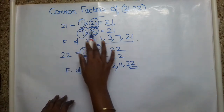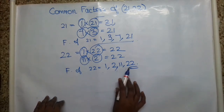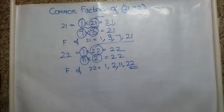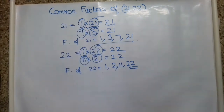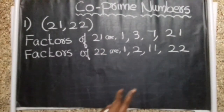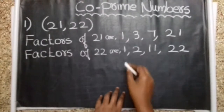So the factors of 21 are 1, 3, 7 and 21. Similarly, the factors of 22 are 1, 2, 11 and 22. According to the definition of co-prime numbers, we will verify the common factors first. So how do you check the common factors in these two numbers?